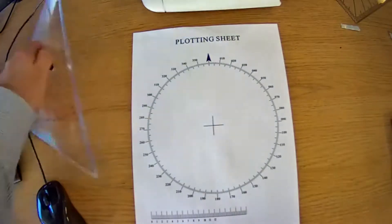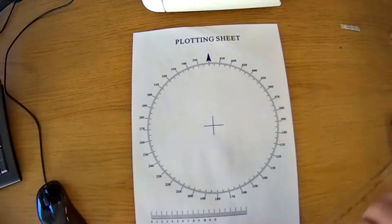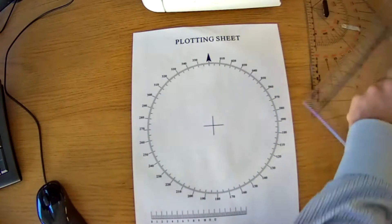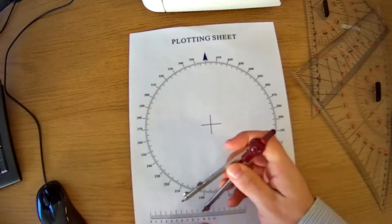You don't have to use triangles — personally I prefer them — but if you want to use parallel rulers, roller rulers, whatever you want, that's fine.